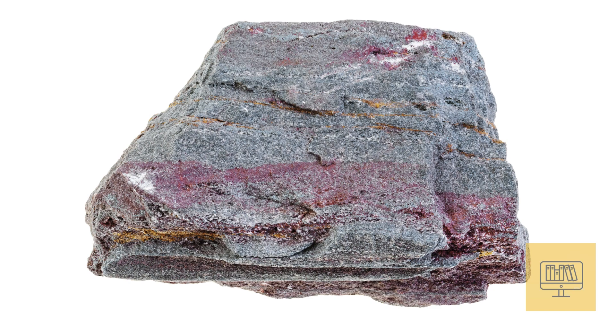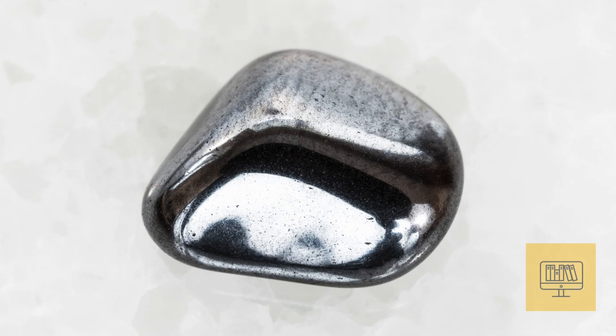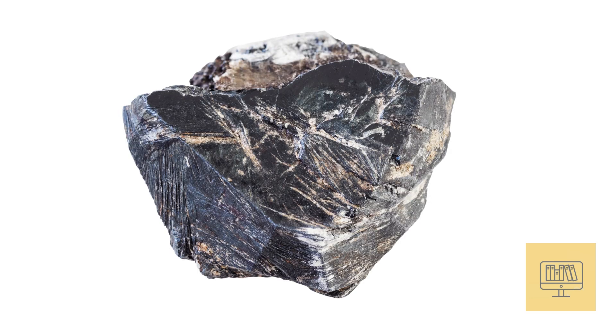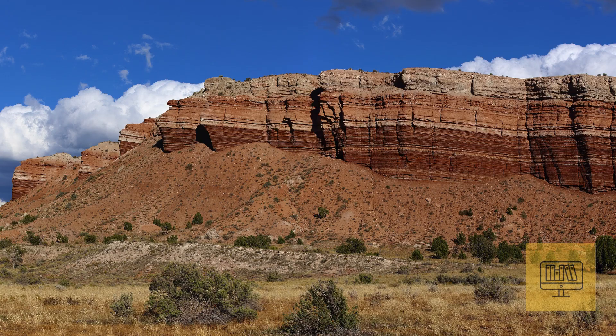Hematite's chemical composition is Fe2O3, which is iron(3) oxide. It is a major source of iron and is found in sedimentary, metamorphic, and igneous rocks.